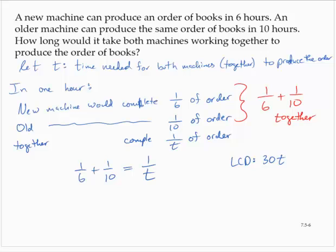So I'll multiply the entire left-hand side by 30T, and I'll multiply the right-hand side by 30T. So I would have 30T times one-sixth plus 30T times one-tenth equals one over T times 30T.